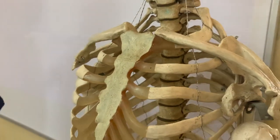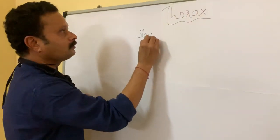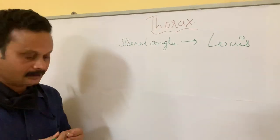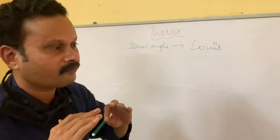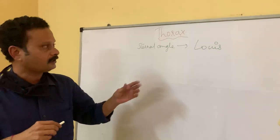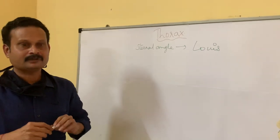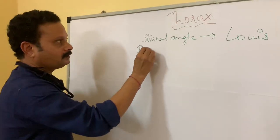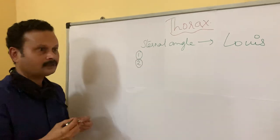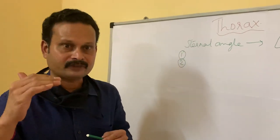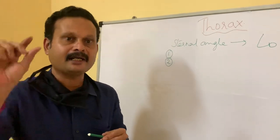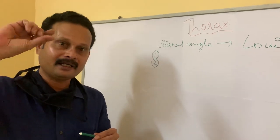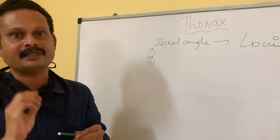The sternal angle is also called the angle of Lewis. This angle of Lewis forms an important landmark where it coincides with the second rib. The counting of ribs should be done from the sternal direction. The second importance is the arch of aorta — it is a continuation of the ascending aorta, beginning and ending at this level. It arches upwards and backwards from the sternal angle and again ends at the sternal angle to become continuous as the descending thoracic aorta.